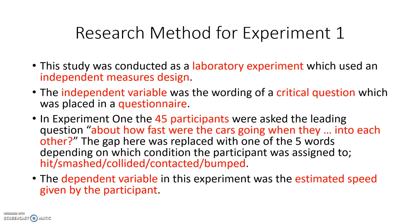In experiment one, the 45 participants were asked the leading question: 'About how fast were the cars going when they ______ into each other?' The gap was replaced with one of five verbs depending on which condition the participant was assigned to. These five verbs were: hit, smashed, collided, contacted, and bumped. They vary in strength and this was designed to manipulate the answer given — for smashed, a higher speed estimate was expected compared to hit or bumped, which are relatively low in strength.